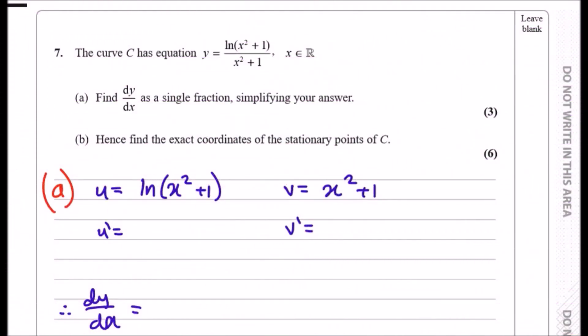Hey guys, welcome back to another question. For number seven, the curve C has equation y equals ln of x squared plus one all over x squared plus one, where x takes all real numbers.